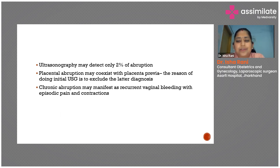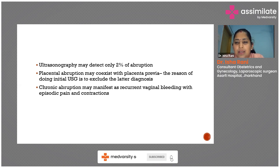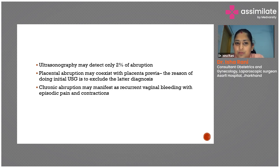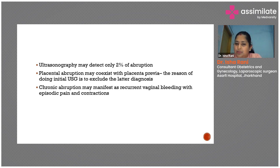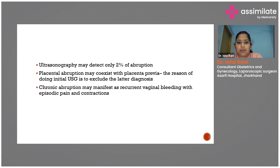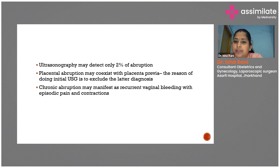Ultrasonography can only detect 20% of abruptions, especially the revealed type. When the placenta gets separated, blood is not accumulating in the retroplacental area, so there may be no sign on ultrasound to give a diagnosis of abruption. However, whenever a patient presents with bleeding per vagina in the late trimester, an ultrasound must be done to exclude placenta previa, as placenta previa may be associated, and this will help manage the pregnancy better.